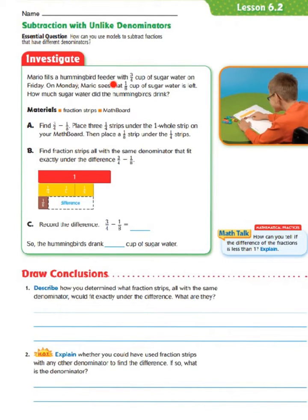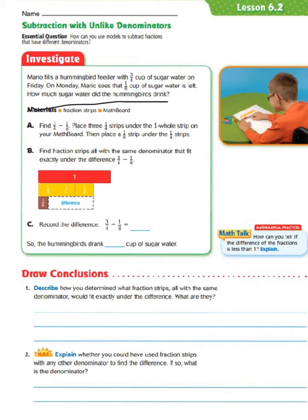Mario fills a hummingbird feeder with 3 fourths cup of sugar water on Friday. On Monday, Mario sees that 1 eighth cup of sugar water is left. How much sugar water did the hummingbirds drink?